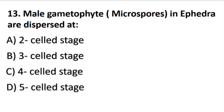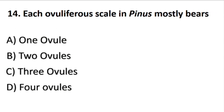Male gametophyte in Ephedra is dispersed at — the answer is D part: 5-celled stage. Each ovuliferous scale in Pinus mostly bears — the answer is B part: 2 ovules.